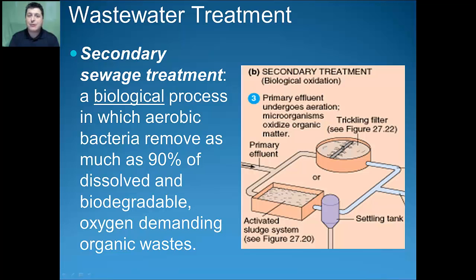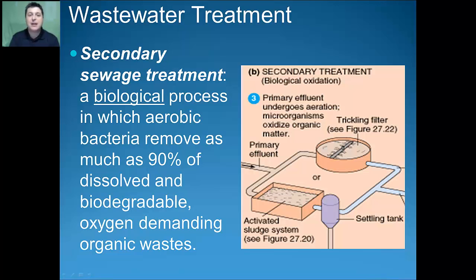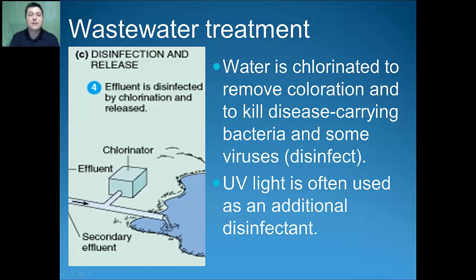The solid material, now referred to as primary effluent, enters into secondary sewage treatment. This is a biological process in which aerobic bacteria remove as much as 90% of the dissolved and biodegradable oxygen-demanding wastes. This is done by aerating the solid material and allowing bacteria to decompose the organic waste. The liquid waste recovered from this process is first chlorinated to remove coloration and kill disease-carrying bacteria, and sometimes it's also treated with ultraviolet light as an additional disinfectant before being released into a surrounding body of water.